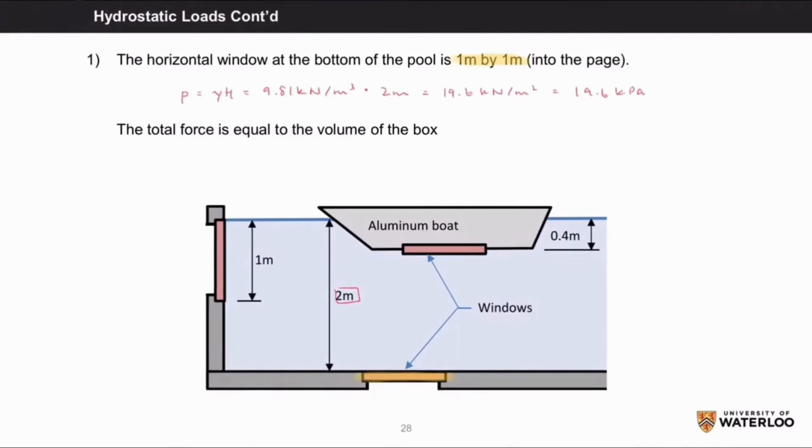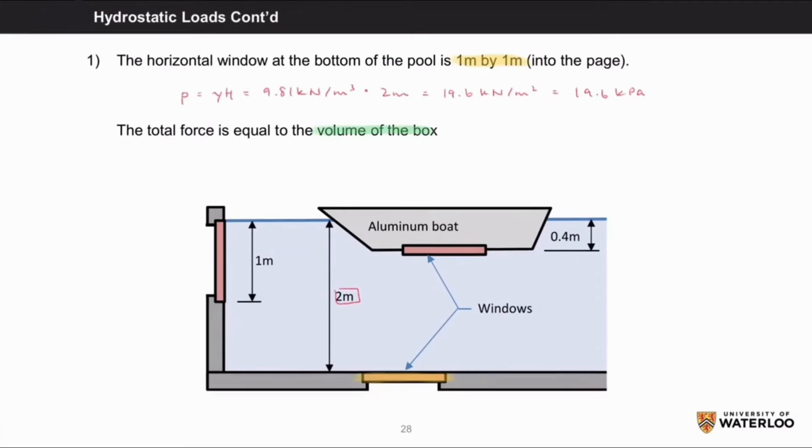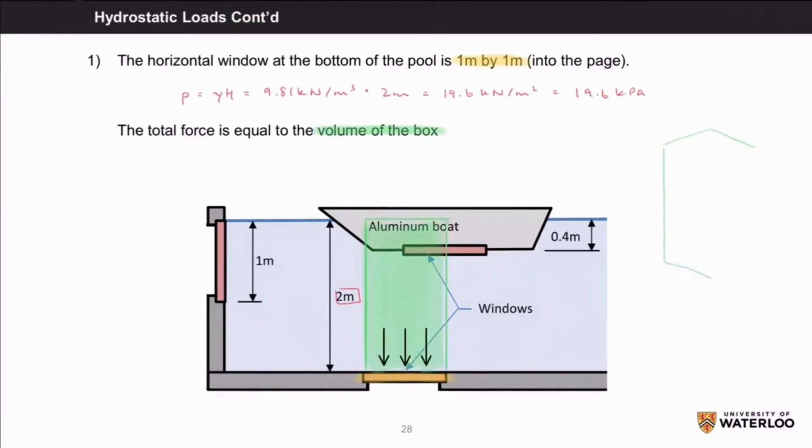The total force acting on the bottom window due to pressure is equal to the volume of the box. Here I am just drawing a 3D visualization of this box to show the total force that is being exerted on the bottom window. Force will be equal to pressure times the area of the window, which is 19.6 kilonewtons per meter squared times the 1 meter by 1 meter area. This gives us a force of 19.6 kilonewtons.